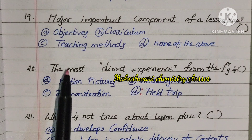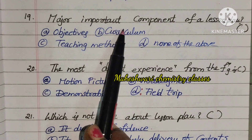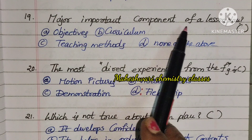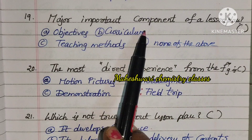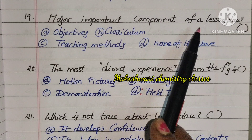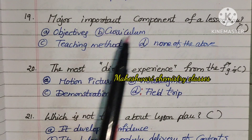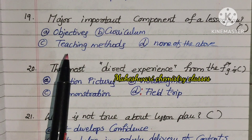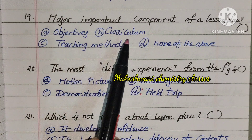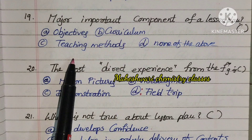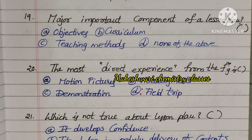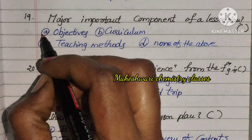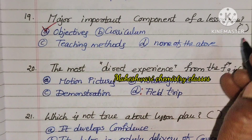Nineteenth question: What is the major important component of a lesson plan? The major important component is Objectives. Option A.